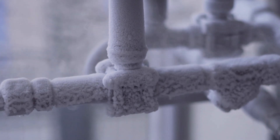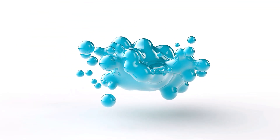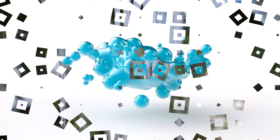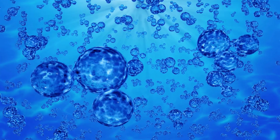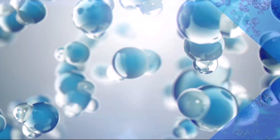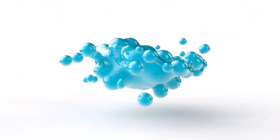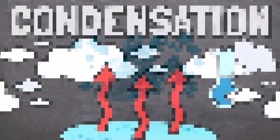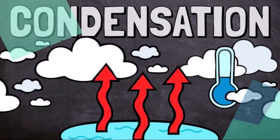As the water vapor rises higher into the atmosphere, it cools down. This cooling causes the water vapor to condense, forming tiny water droplets or ice crystals. These tiny particles gather together to create clouds in a process called condensation.